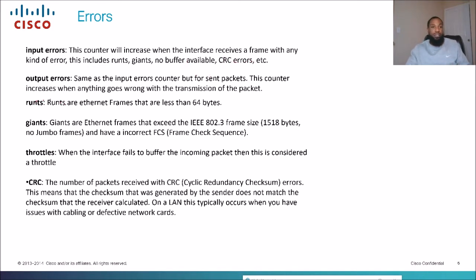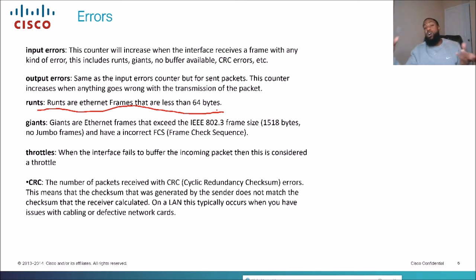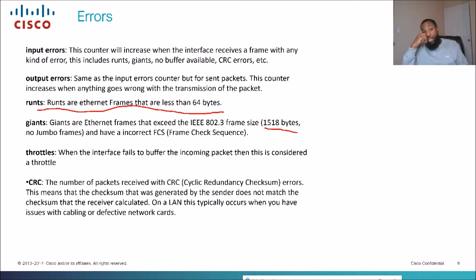Runts are ethernet frames that are less than 64 bytes — something really small. That's going to cause an error because the receiver is expecting a certain frame size. Giants are frames that exceed the IEEE 802.3 frame size of 1518 bytes, also called jumbo frames, and they also have an incorrect FCS or frame check sequence, which is a way to check for errors.